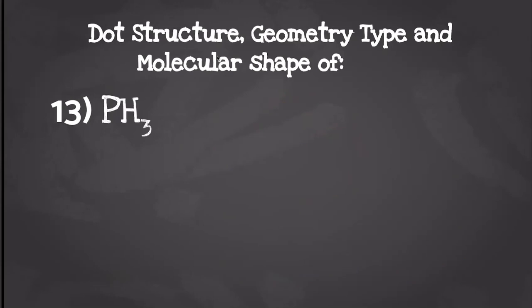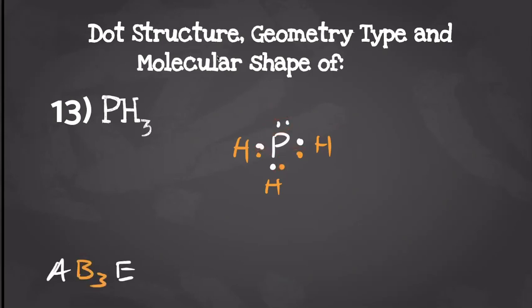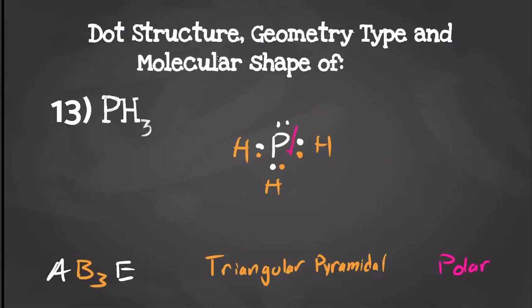Next up we have phosphorus trihydride. Phosphorus is going to have five valence electrons and each hydrogen is going to have one, so when we draw our dot structure it should look something like this. Phosphorus is going to have three things attached to it as well as that lone pair, giving us a geometry type of AB3E, which gives us a molecular shape of trigonal pyramidal. Just like nitrogen trihydride, that lone pair is going to be pulling a lot stronger than all of the hydrogens, so it's going to be a polar molecule, and we'd have a dipole moment going up.